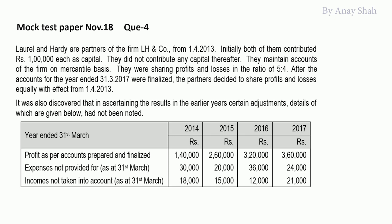From 2013 to 2017 — four years — the profit sharing ratio was 5:4. Now they decided that with effect from 1st April 2013, the profit sharing ratio should be equal. So the profit sharing done over 4 years in the ratio 5:4 was incorrect; it needs to be revised to equal ratio for years 2014, 15, 16, and 17.